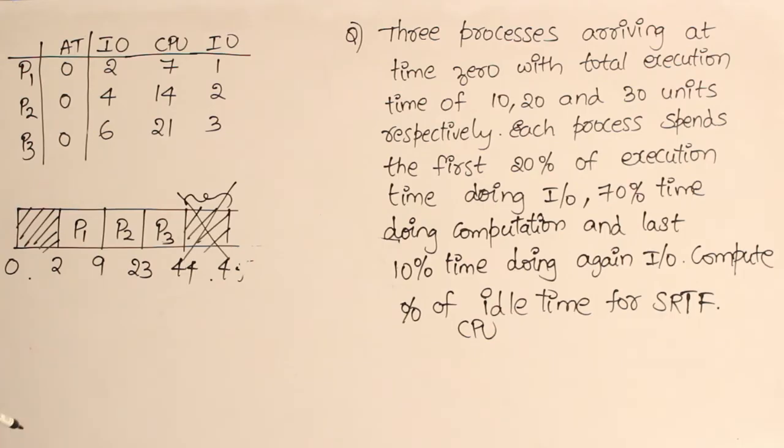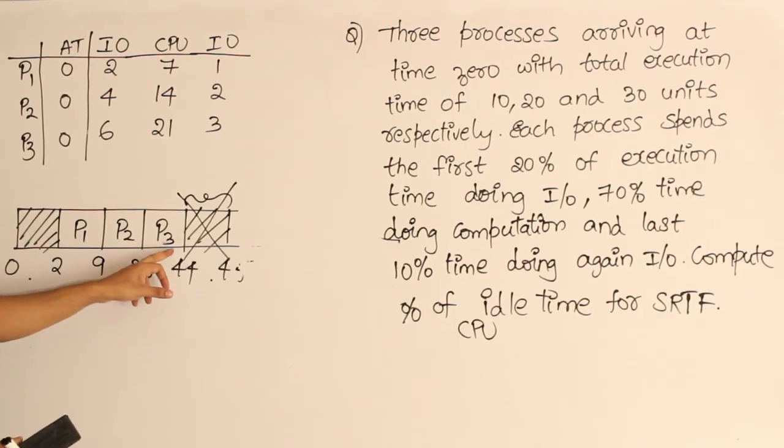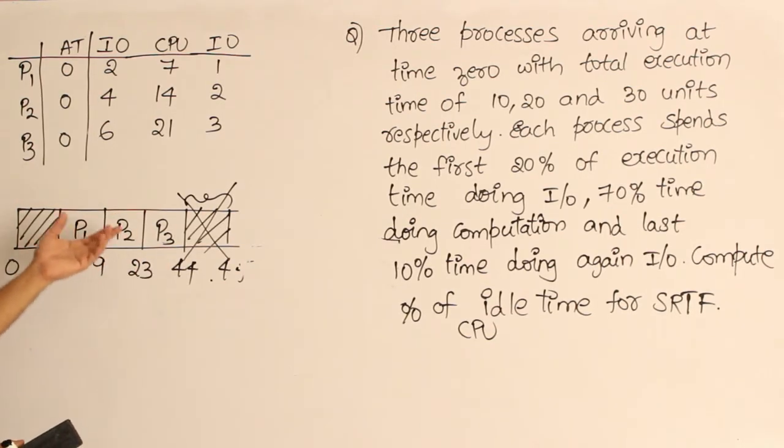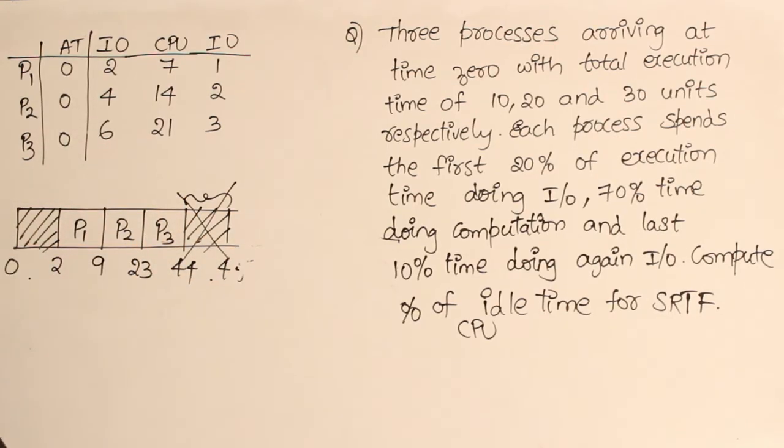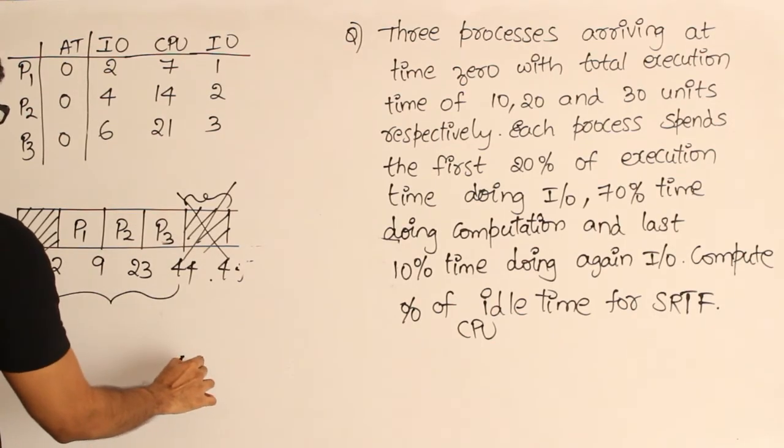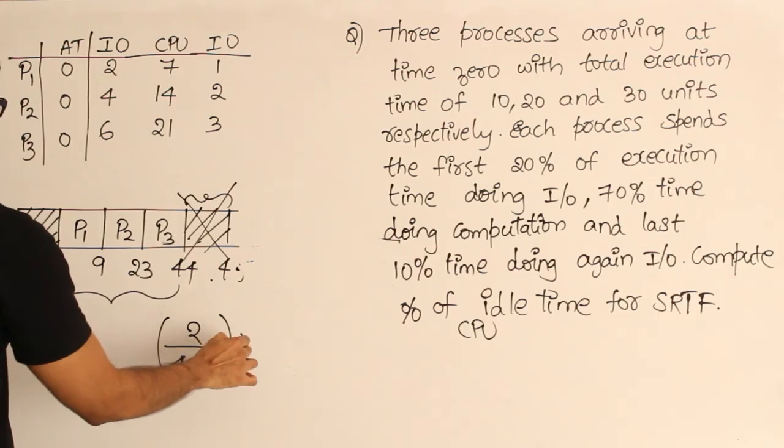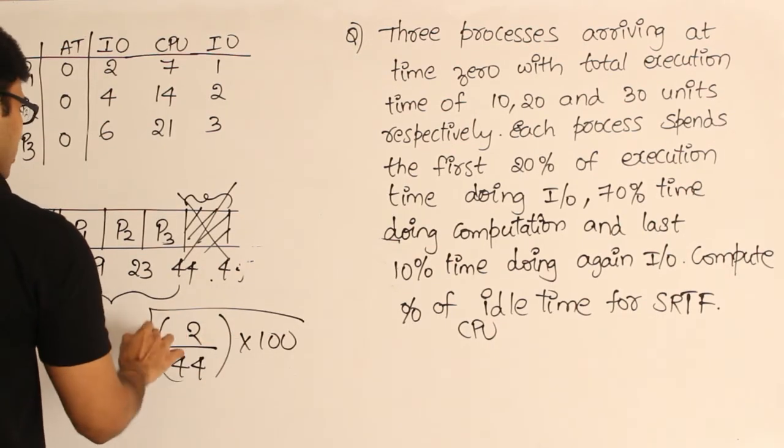The reason is simple: once P3 is done with its execution, CPU is again free and could be scheduled for other processes. Therefore idle time is only 2. So out of this entire time, out of 44 units, CPU is idle only for 2 units. Therefore percentage of time it is idle is 2 by 44 into 100.